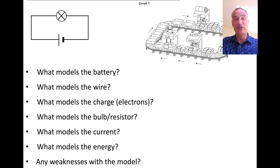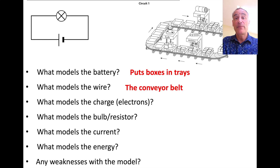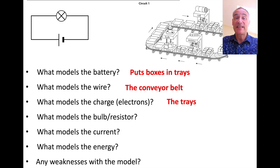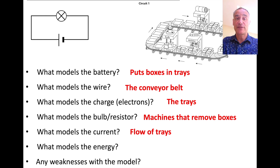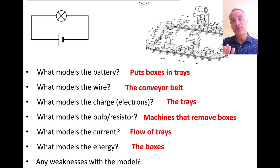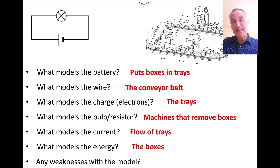Let's check what each thing models. The battery is modelled by a machine putting boxes into the trays. The conveyor belt is modelling the wire. The electrons are being modelled by the trays which carry the energy. The bulb and resistor are being modelled by machines taking those boxes off. Current is the flow of charge - so it's how fast those trays are moving around. Energy is modelled really well because we can physically see those boxes of cereal - each one represents a joule of energy. The only weakness is it's not moving, so you can't actually see how fast the charges are going.